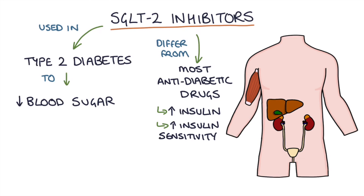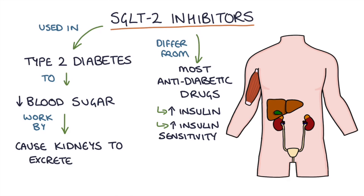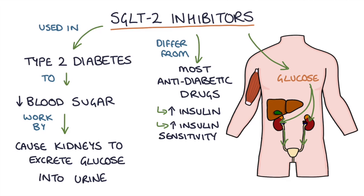However, SGLT2 inhibitors work slightly differently. They work by causing the kidneys to excrete glucose into the urine, and by excreting glucose into the urine you reduce the amount of glucose, or sugar, in the blood and the rest of the body.